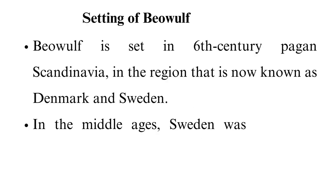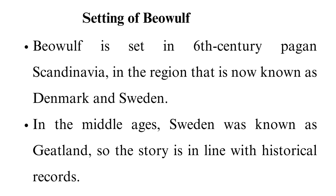Beowulf is set in 6th-century pagan Scandinavia, in the region now known as Denmark and Sweden. In the Middle Ages, Sweden was known as Geatland, so the story is in line with historical records. Christianity was also spreading in Europe, so there are elements of it in Beowulf — for example, Beowulf says that God is his protector when battling Grendel's mother, and Hrothgar tells Beowulf that becoming a king is by God's grace. At first the poem was orally transmitted, but a written copy was made in the 11th century by an anonymous writer simply referred to as the Beowulf poet.